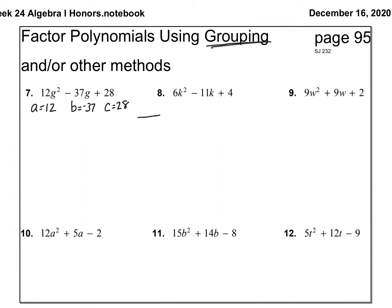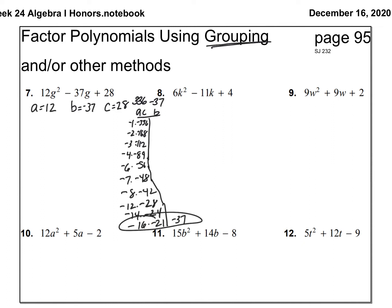A times c: 12 times 28 is 336. I want a sum of negative 37, which means I'll have a negative times a negative. I made the entire list of factors and finally found the pair that works: negative 16 times negative 21. You do not have to write the entire list of factors.